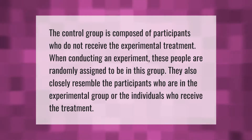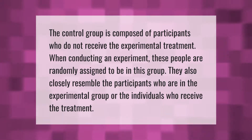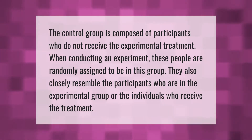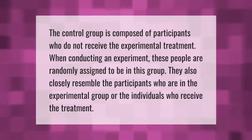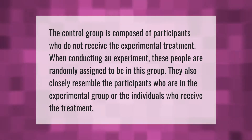The control group is composed of participants who do not receive the experimental treatment. When conducting an experiment, these people are randomly assigned to be in this group. They also closely resemble the participants who are in the experimental group, or the individuals who receive the treatment.